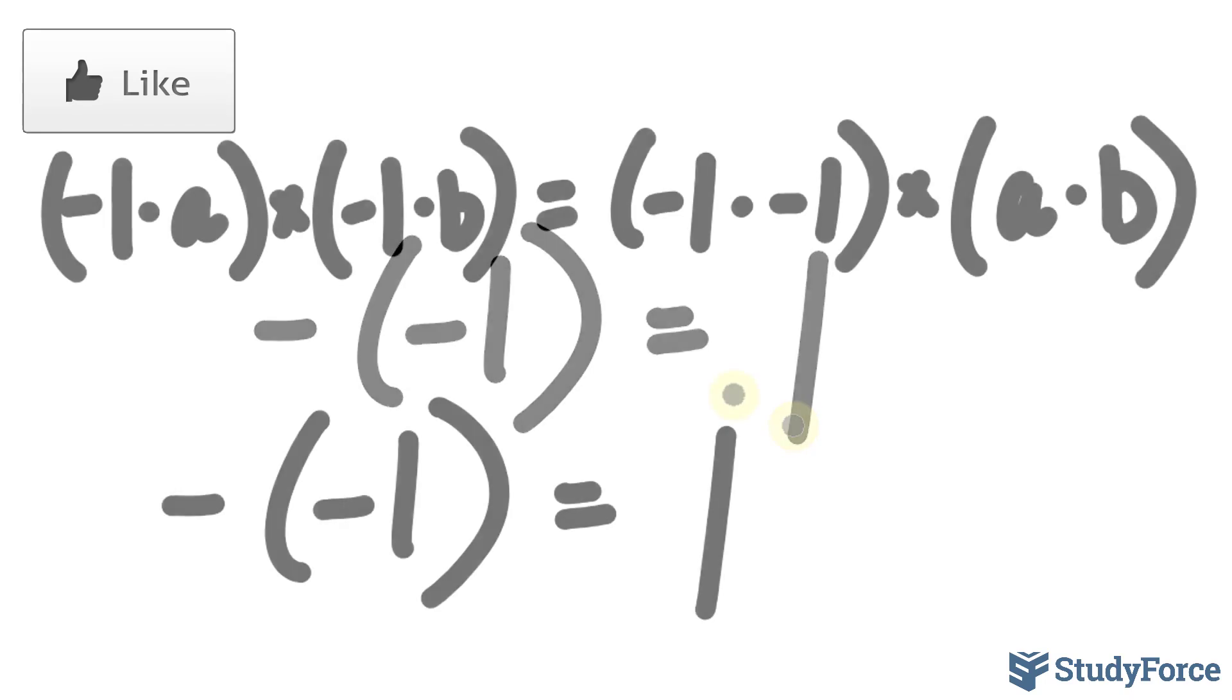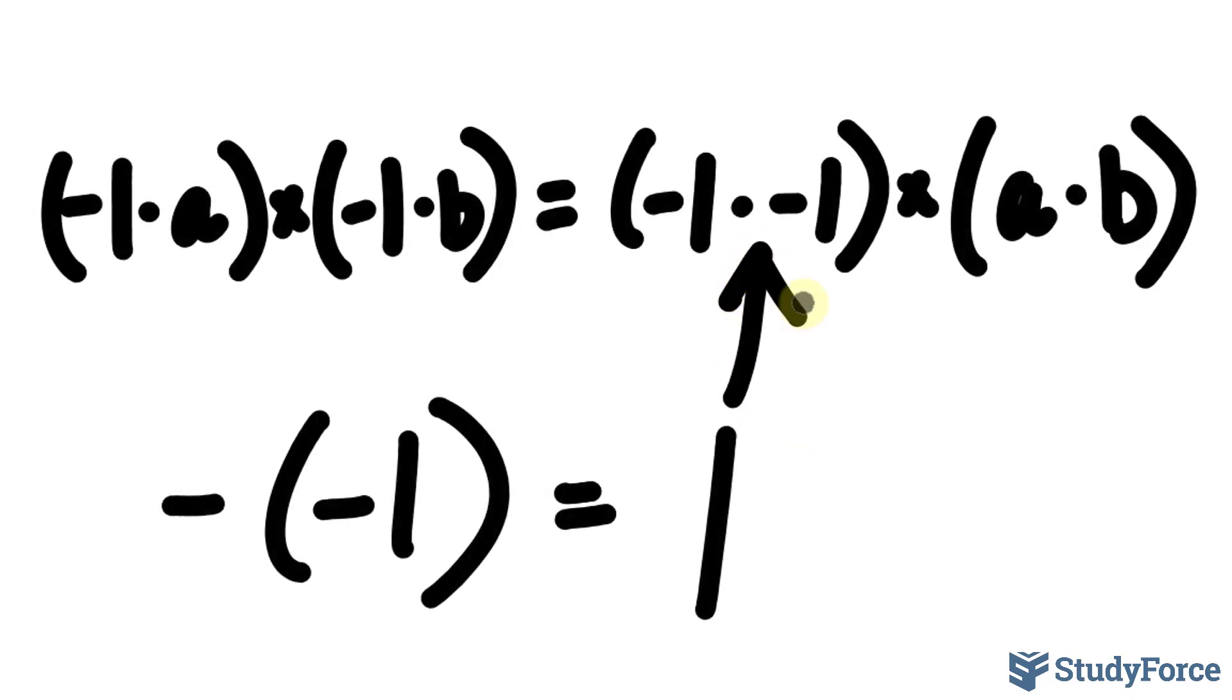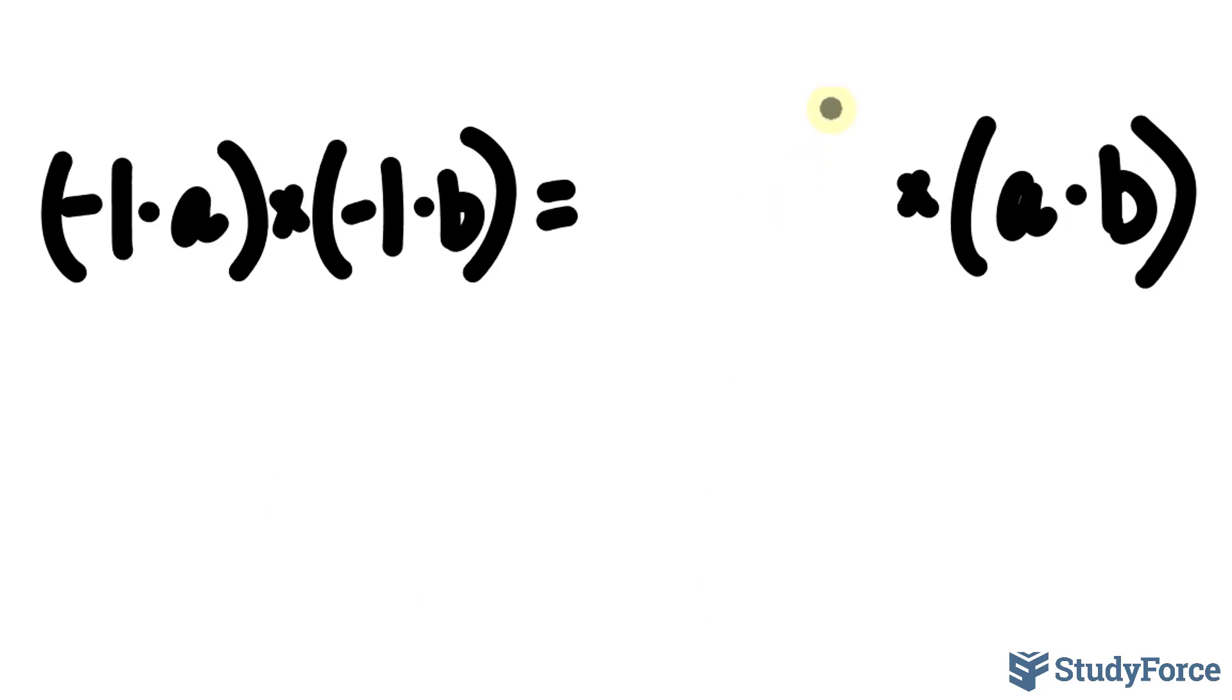Substituting this back into our equation, negative times negative one multiplied by a times b is in fact positive one times a times b, and that simplifies to simply a times b being positive.